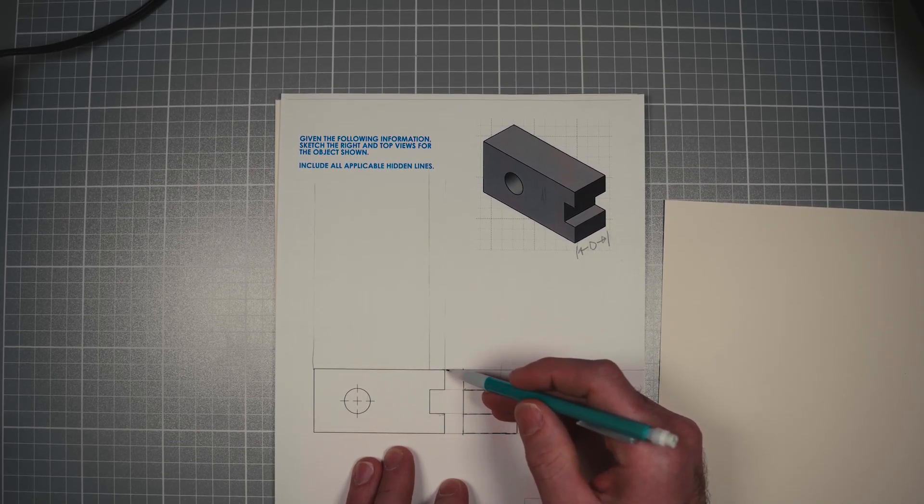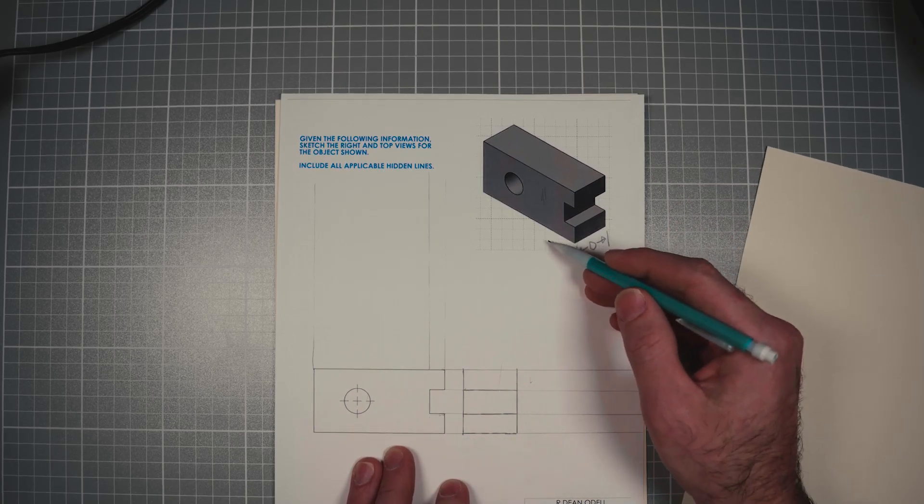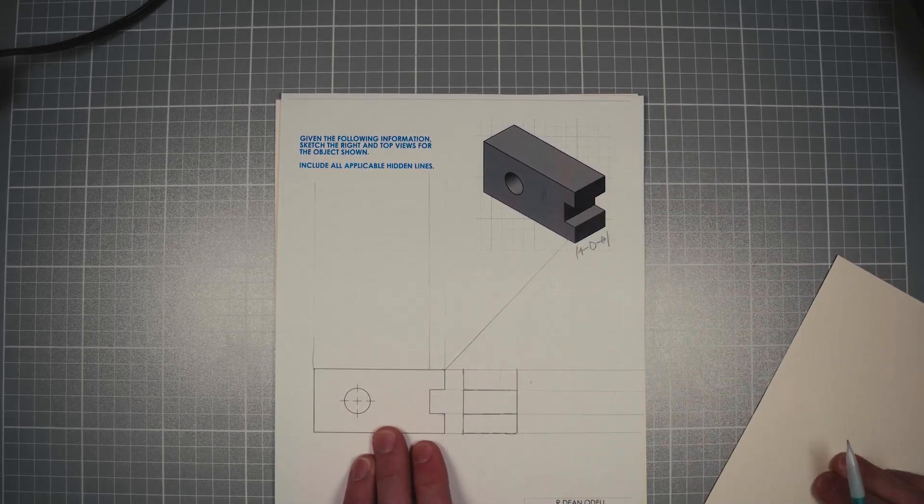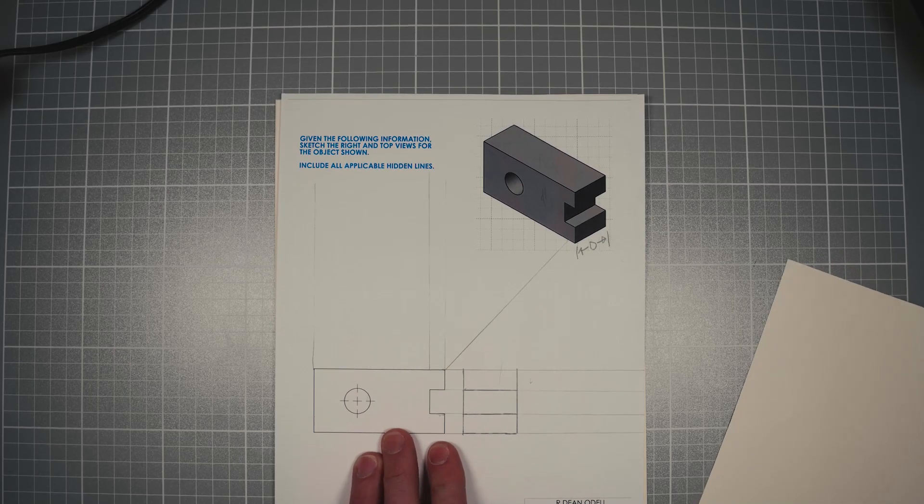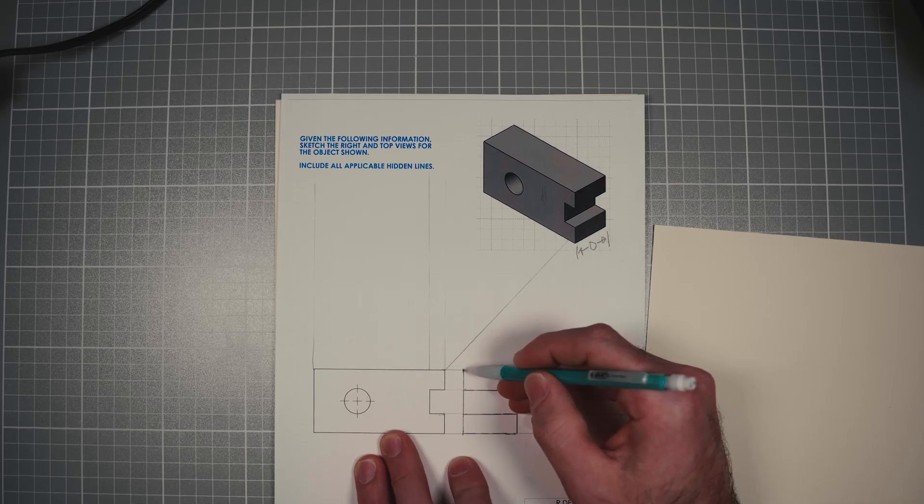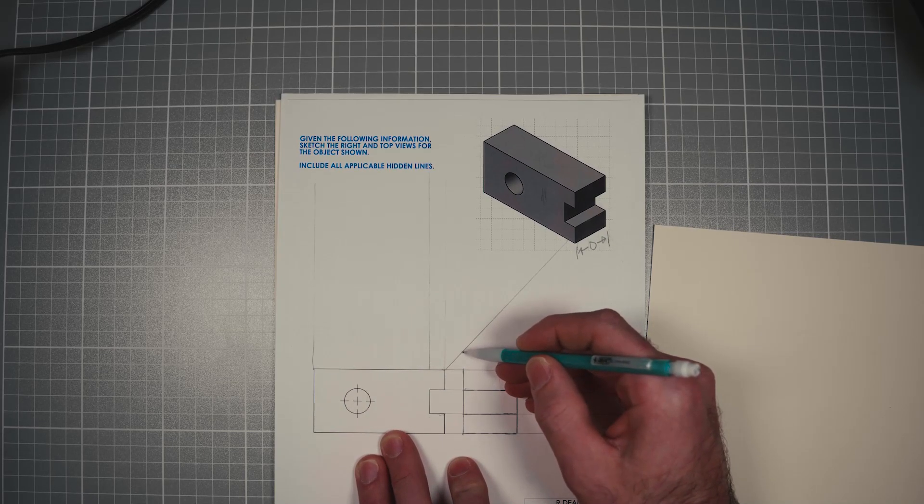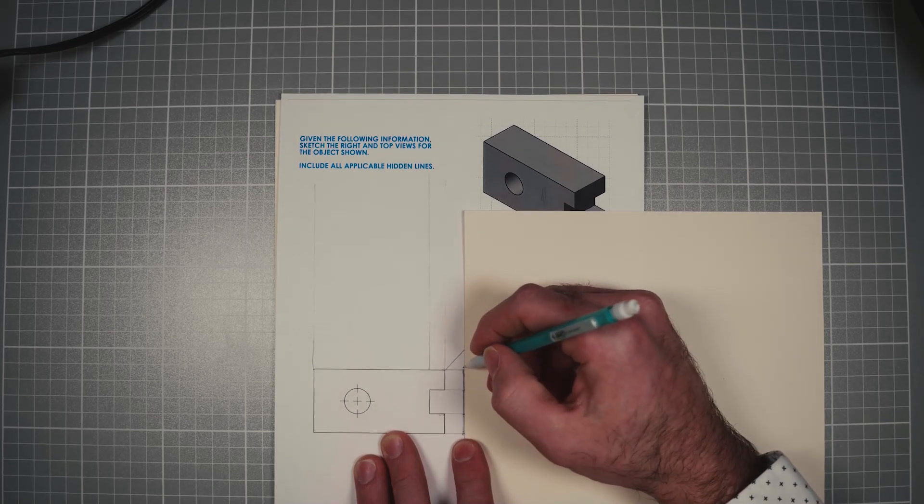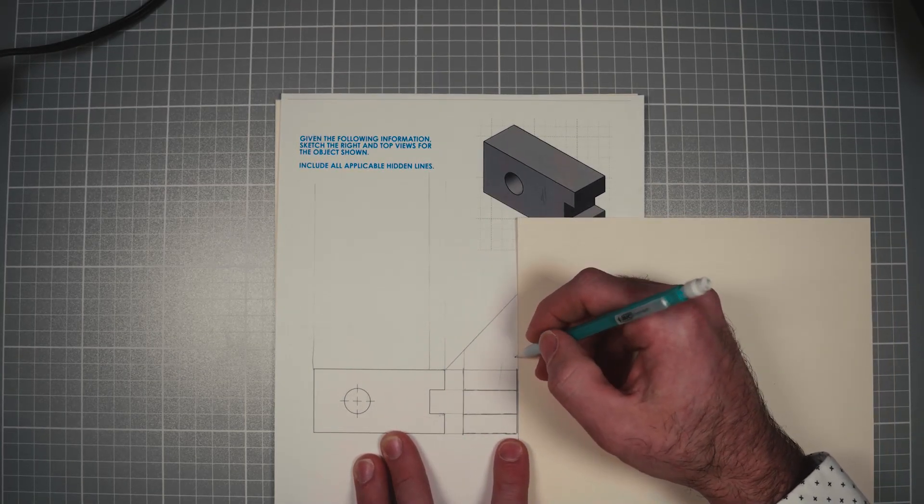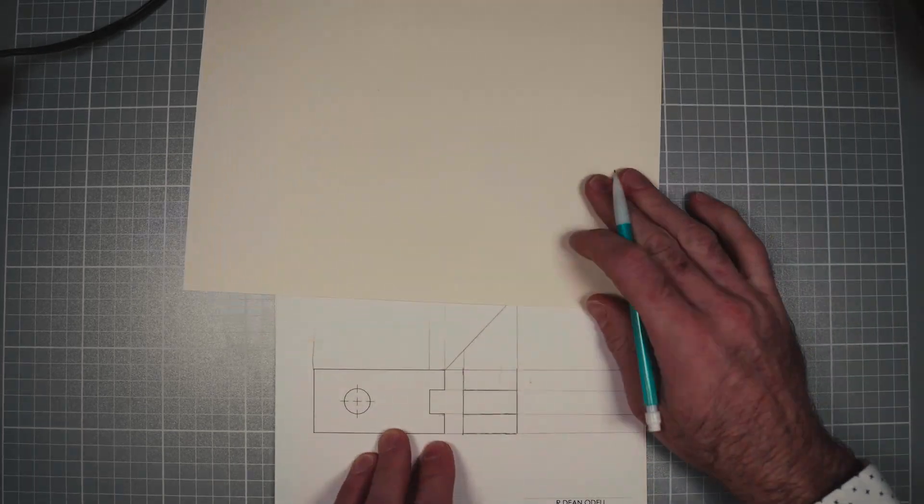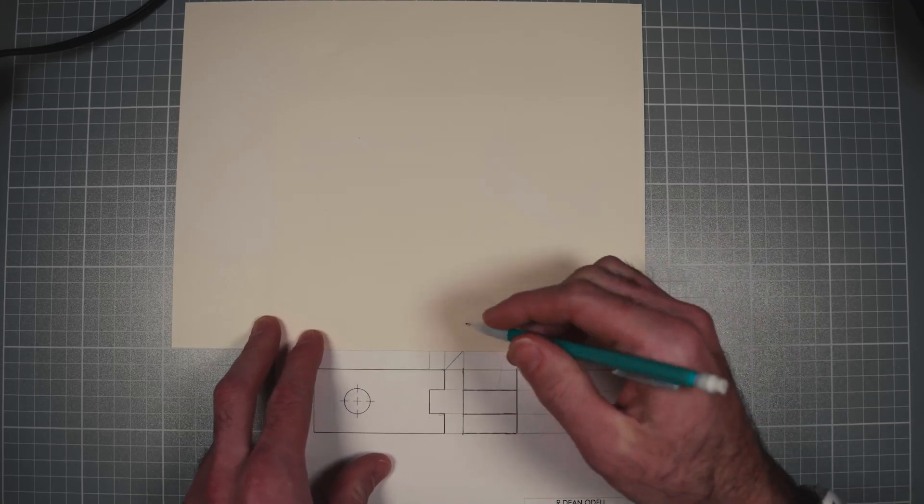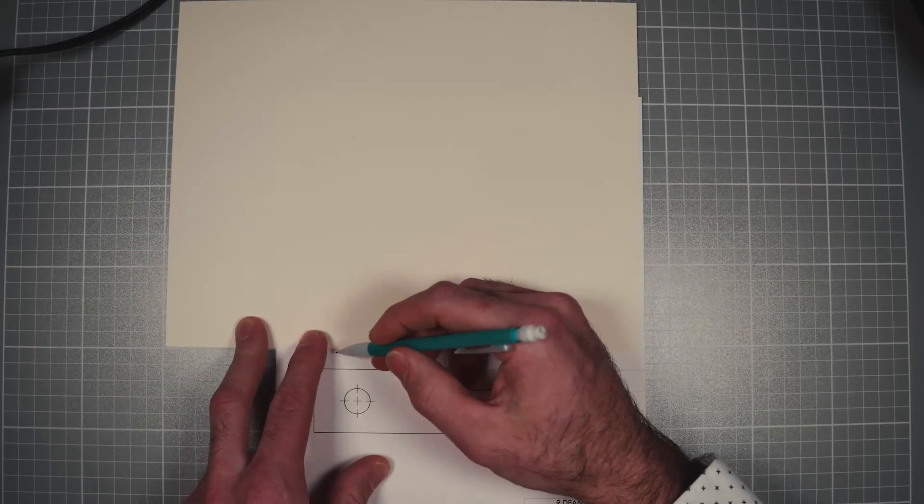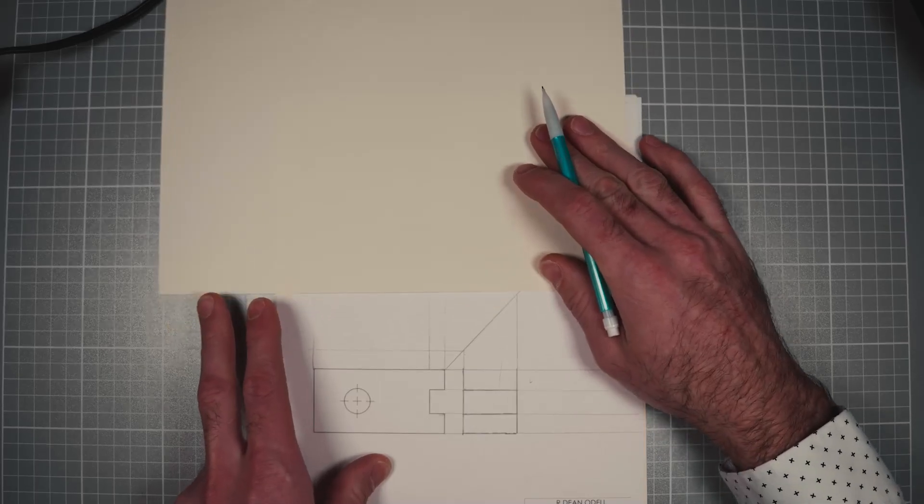Now, we've got to make what's known as a miter line. A miter line is 45 degrees between the views. So again, a protractor would be great but I'm just going to guess. That looks like 45 degrees to me. So what the miter line does, we're going to come from this visible line up here with the projector and then take a left turn and go this way with the projector. So let me show you what that does. So we come up here with a projector and I'll go ahead and do this side as well. Now, we take a 90 degree turn and I'm just looking for the intersection of the miter line and the projector I just made and I'll do the same thing up here.